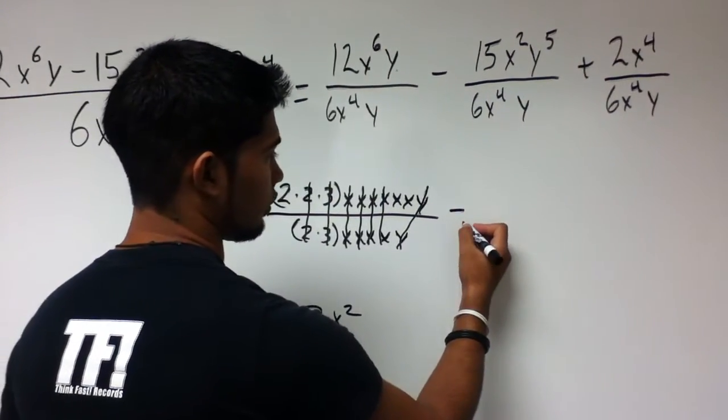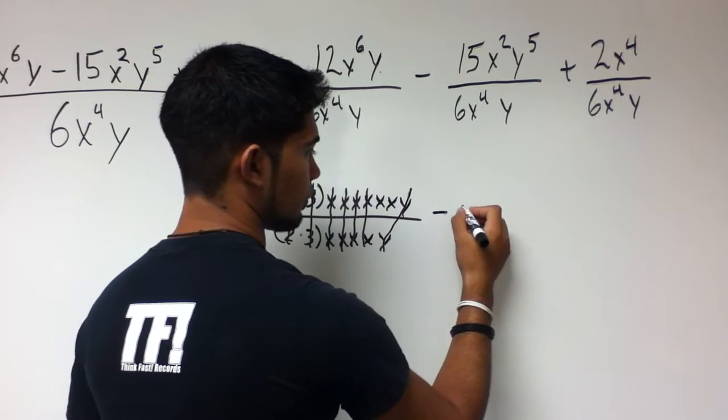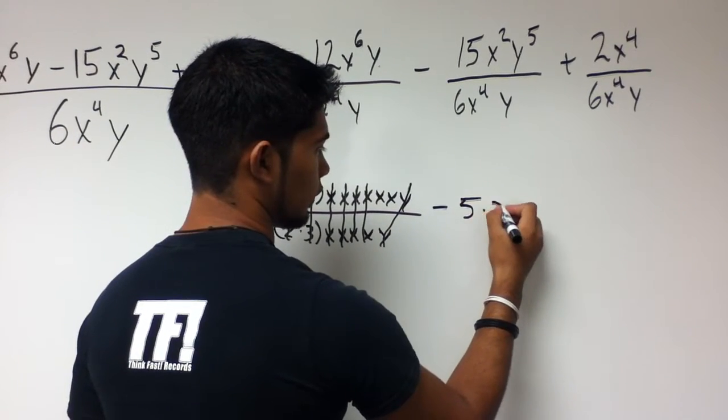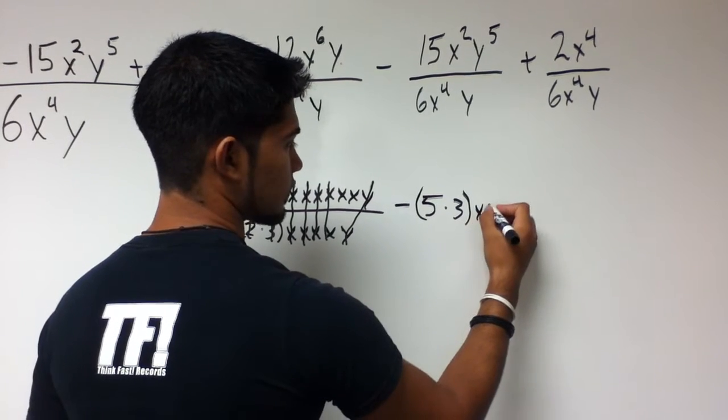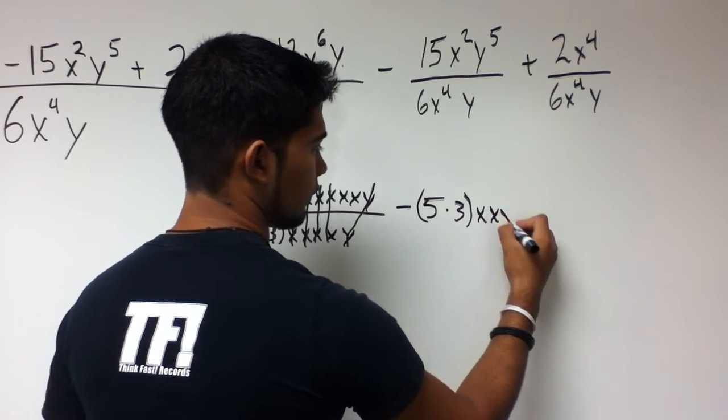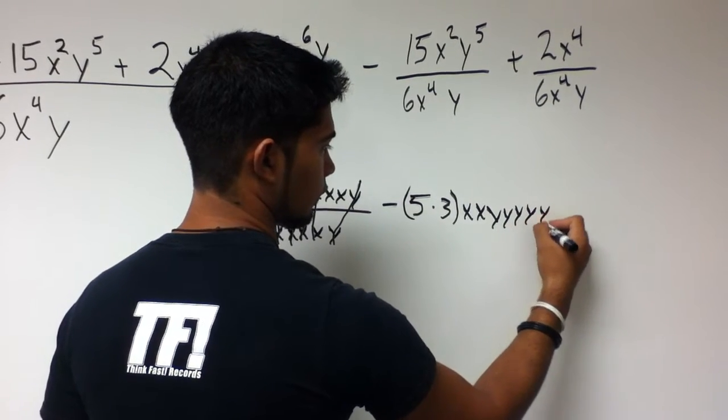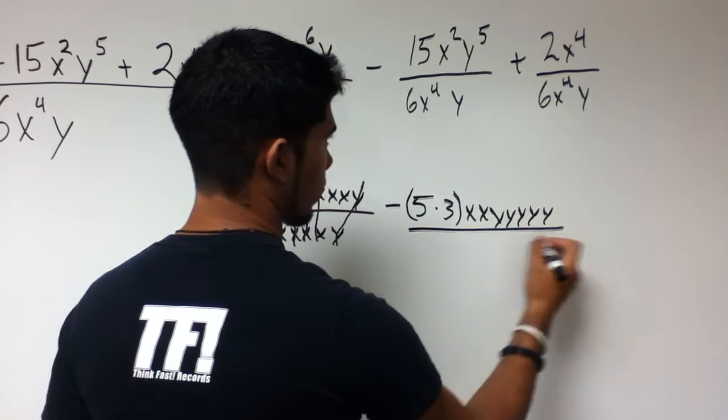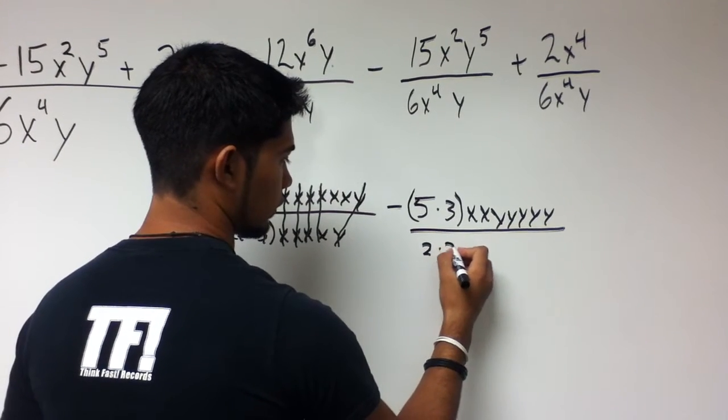Moving on to this next part of the expression. We break down 15 doing the exact same thing. So we're left with 5 and 3. And x, x, and 5 y's: 1, 2, 3, 4, 5. Over 6, which breaks down to 2 and 3.